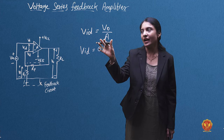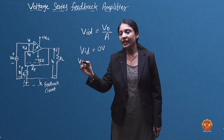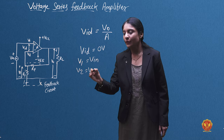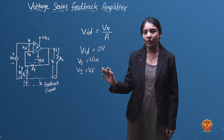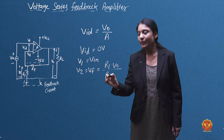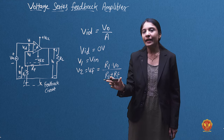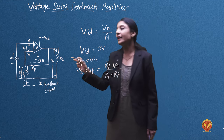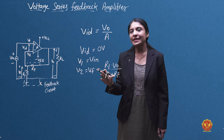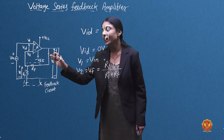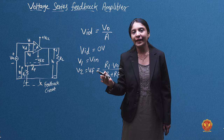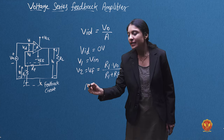If A is very large, and we have V1 equal to the input voltage VIN, and V2 equal to VF, the feedback voltage. This feedback voltage VF is equal to R1 times VO divided by R1 plus RF. Since the voltage is at the non-inverting input terminal, V1 is approximately equal to that of the inverting input.